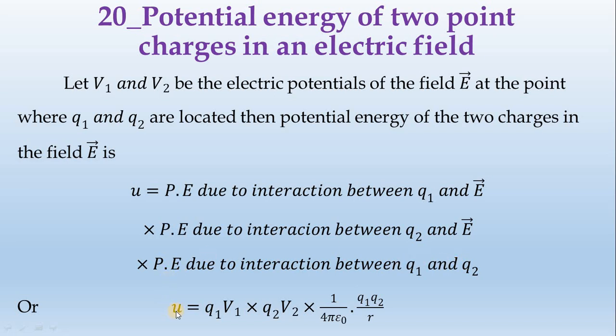Normally, work done is stored form of potential energy. Work done is equal to charge times potential. Again, Q1, V1. And for Q2, V2.